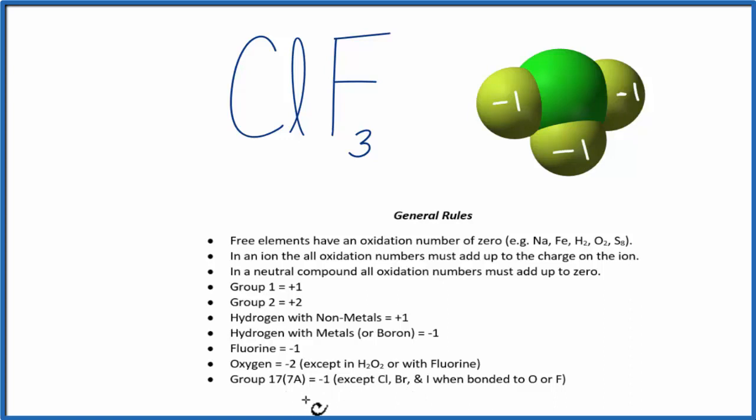Chlorine is in group 17A, and normally it is minus one, except when it's bonded to something like oxygen or fluorine. In this case, since we have it bonded to these fluorines, we can't use this rule, and we'll need to figure out the oxidation number on the chlorine here.